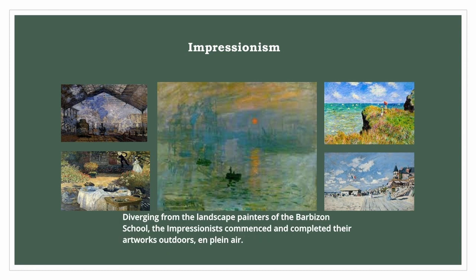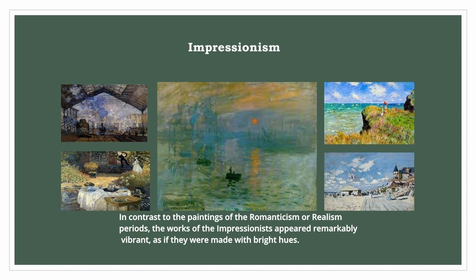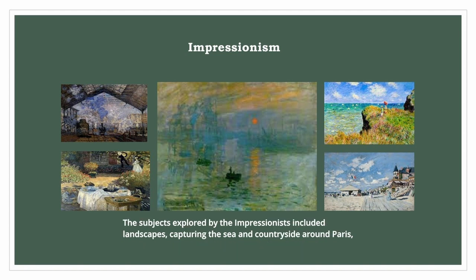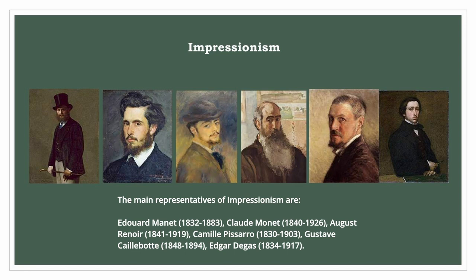Diverging from the landscape painters of the Barbizon School, the Impressionists commenced and completed their artworks outdoors, on plein air. In contrast to the paintings of the Romanticism or realism periods, the works of the Impressionists appeared remarkably vibrant, as if made with bright hues. In their compositions the air circulates and the light penetrates everywhere, even in the shadows, illuminating every element. The subjects explored included landscapes, the sea and countryside around Paris, as well as everyday city life including traffic, entertainment, roads, railways, and train stations. The main representatives of Impressionism are Édouard Manet, Claude Monet, Auguste Renoir, Camille Pissarro, Gustave Caillebotte, and Edgar Degas.